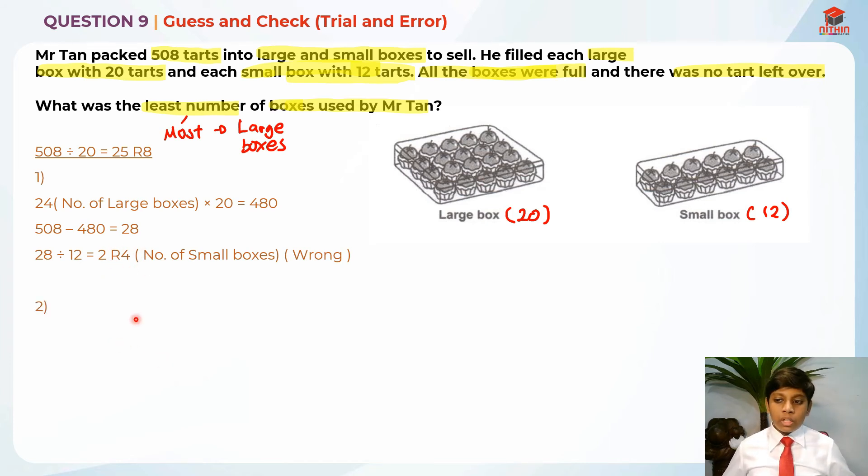Next I'm going to try the next smallest number, which is 23. So 23, the number of large boxes times 20 is 460. After that, we should take 508 minus 460, which is 48. We know that 48 is a multiple of 12, right? So basically there is 4 small boxes. So this is correct already.